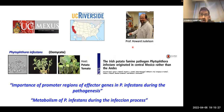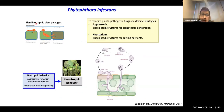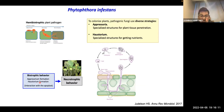Working with Phytophthora in Professor Judelson's research group, I had some projects. One was the importance of promoter regions of effector genes in Phytophthora during pathogenesis, and another was understanding the metabolism of Phytophthora infestans during the infection process. Phytophthora infestans is a hemi-biotrophic plant pathogen — at the beginning of the infection process it shows biotrophic behavior, but at the end it changes to necrotrophic behavior. Some of the most important structures during the biotrophic stage are appressoria, specialized for plant penetration, and haustoria, specialized for getting nutrients during infection and colonization.